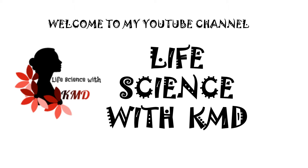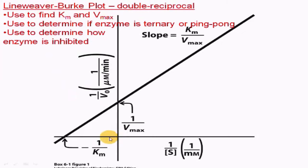Hello everyone, welcome to my YouTube channel Life Science with KMD. Today I'm going to explain about the Lineweaver-Burk plot, also called the double reciprocal plot, because it is like the Michaelis-Menten plot but in a reciprocal manner. It is used to find out Km and Vmax, to determine enzyme ternary or ping-pong form, and to determine how an enzyme is inhibited.